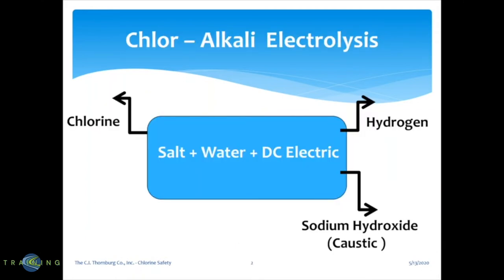How is chlorine made? You basically add salt and water and then add electricity to it and you get three byproducts: one is chlorine, one is sodium hydroxide or caustic soda, and the other is hydrogen. This is basically a very simple process.